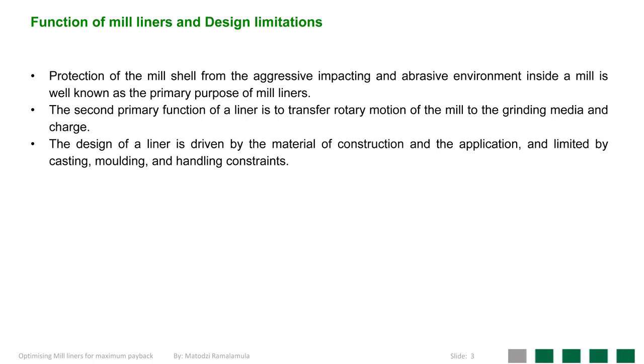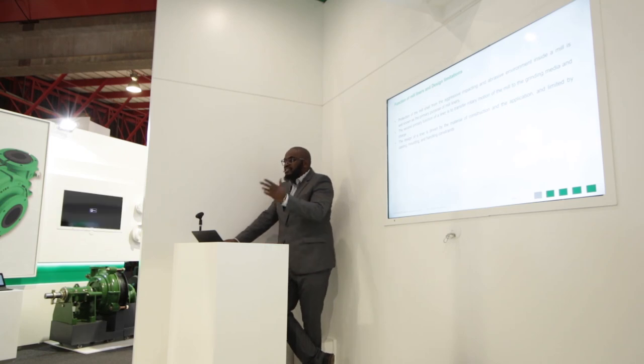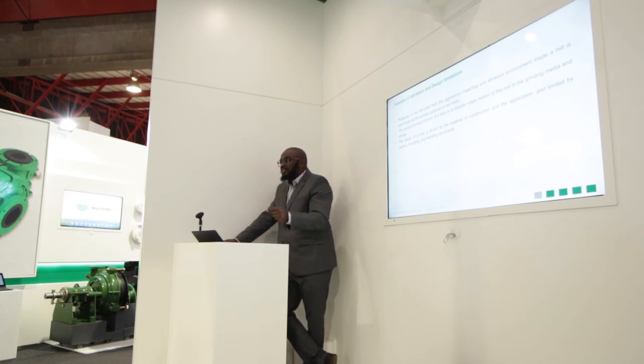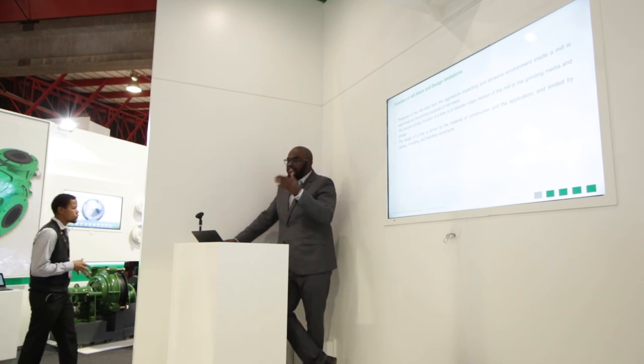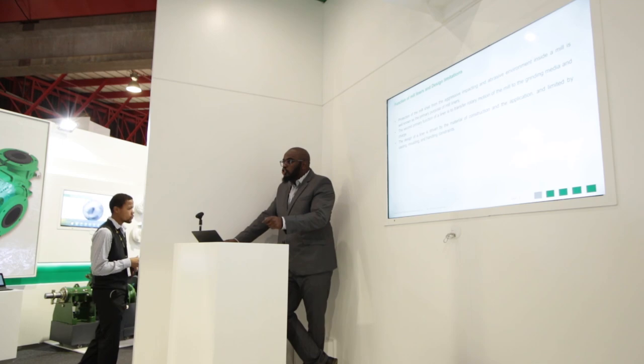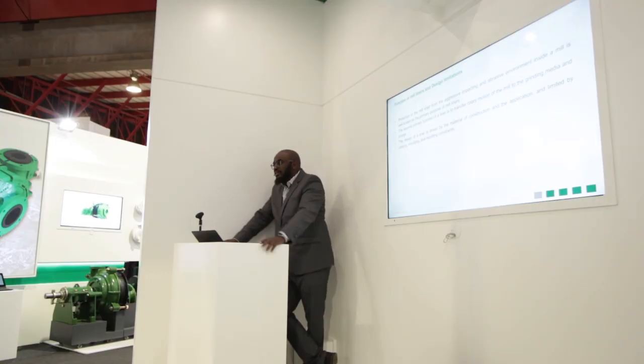People often say the liner is there just to protect the expensive mill shell — but that's not basically it. It's even more than that. The liner is there to protect the mill shell, yes, but there's also another important role. Those liners are also there to make sure they transfer the rotary energy onto the grinding media so that you can get the correct grind.